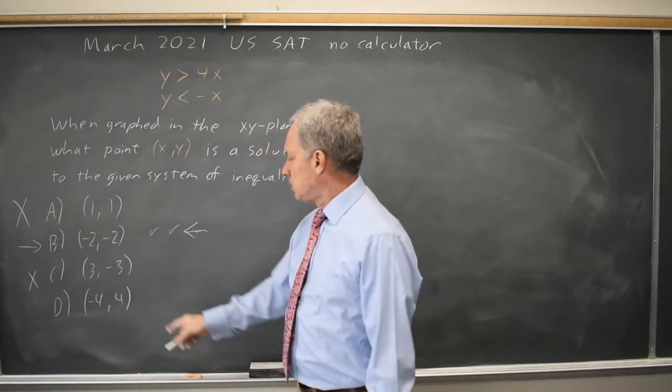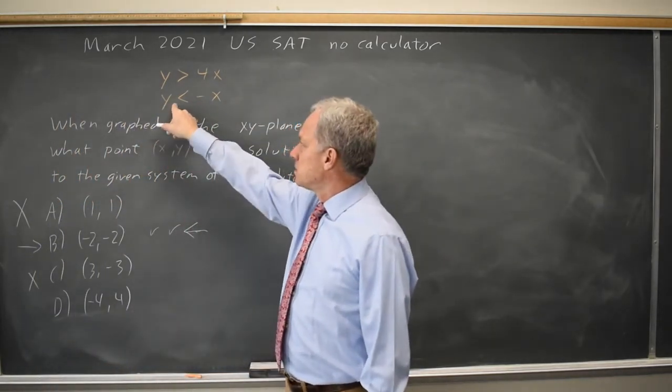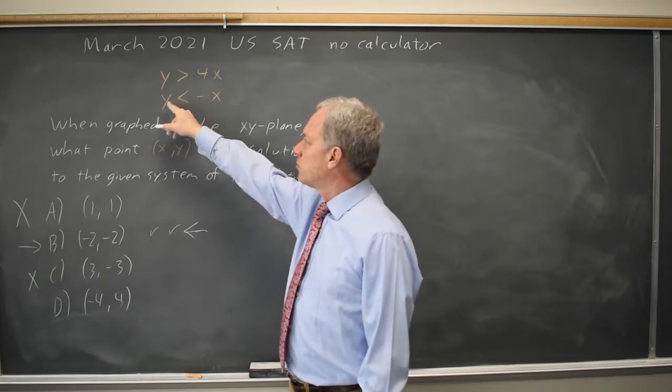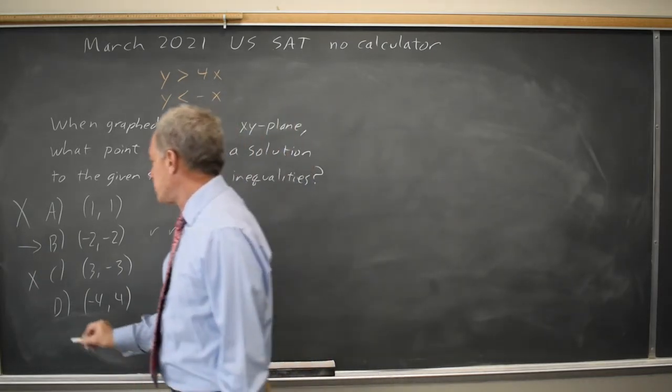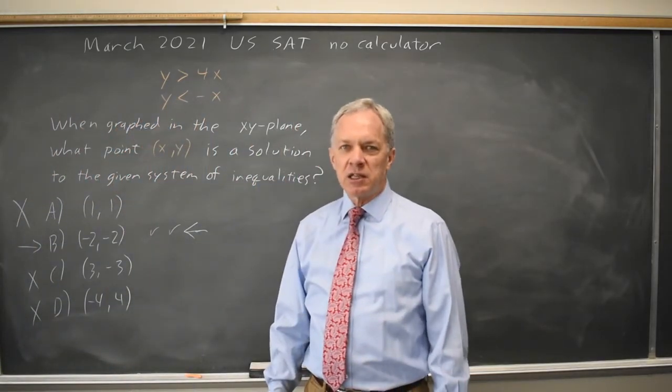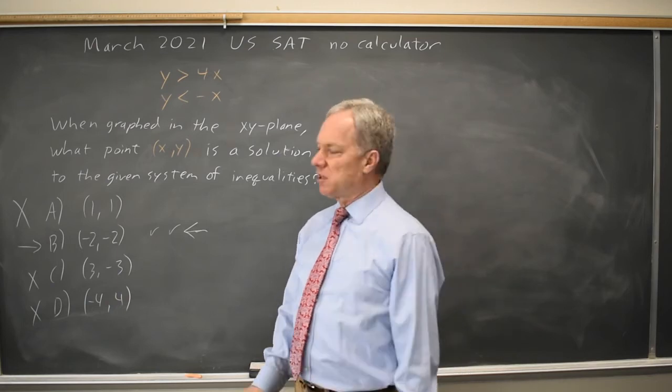And choice D, Y equals 4. Is that less than the negative of -4, which is 4 less than 4? No, they're equal again. So choice B is the only answer that works, and that's probably the fastest way of solving.